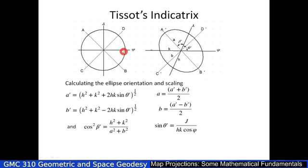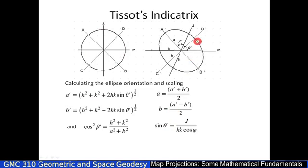Normally we take a unit circle — it could be any unit — and project it onto the map. You can then calculate the semi-major axis and the semi-minor axis of the ellipse that the circle is going to be distorted into. You can also calculate Theta prime, which is the angle between the meridian and the parallel, and the angle between the meridian and the semi-major axis of the ellipse. A and B — the semi-major and semi-minor axes — tell you how the shape is distorted.